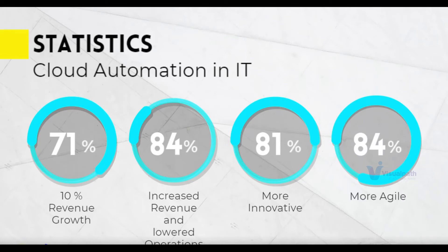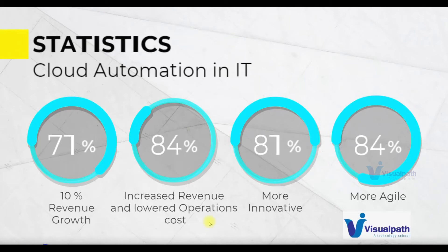CICD adds business value, and so does automating cloud tasks. As per statistics, 70-71 percent of organizations doing cloud automation have found 10 percent more revenue growth. 84 percent of companies have seen increased revenue and lowered their operations cost. 81 percent have become more innovative, because automation frees time to find more innovative solutions. 84 percent said they have become more agile — and agility is exactly what we're looking for in DevOps. Numbers don't lie.